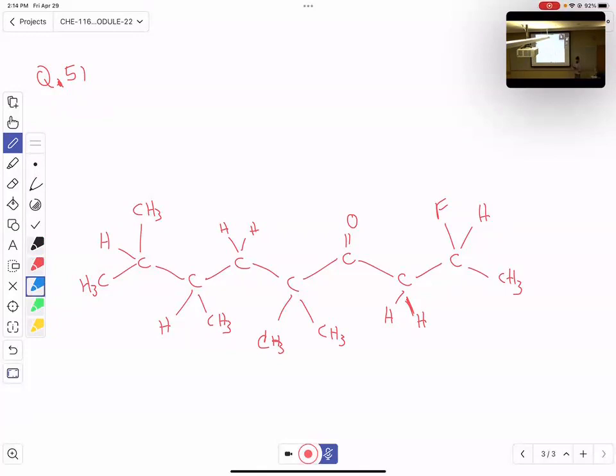And so if I take a look at this carbon right here, I've got a hydrogen, I've got a methyl group, I've got all the rest of the molecule to the right, and all the rest of the molecule to the left. So that's four different branches. This isopropyl is different than hydrogen, which is different than methyl, which is different than the rest of the chain. So that makes this carbon right here chiral.